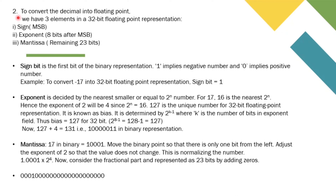Next, we will cover how to convert a decimal number into floating point. There are three elements in a 32-bit floating point representation: sign, exponent, and mantissa. The sign bit is the first bit of the binary representation — 1 implies a negative number and 0 implies a positive number. For example, to convert −17 into 32-bit floating point representation, the sign bit equals 1.